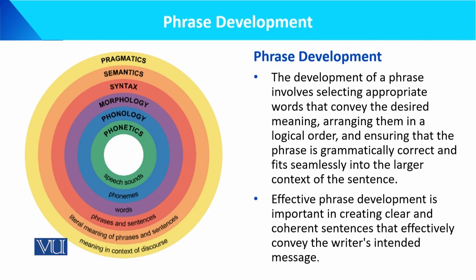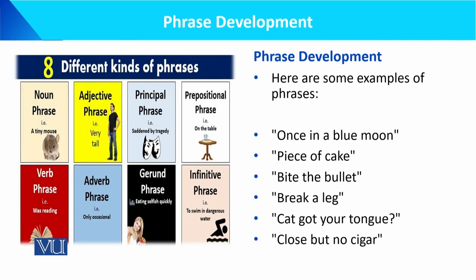Effective phrase development is important for clear and coherent sentence construction۔ تبھی وہ اگر وہ صحیح طور پر جو language speaker ہے وہ صحیح use کرے گا اپنی grammar کا اور صحیح phrases کو combine کرے گا، تو تب جا کے وہ اپنا intended message communicate کر سکتا ہے۔